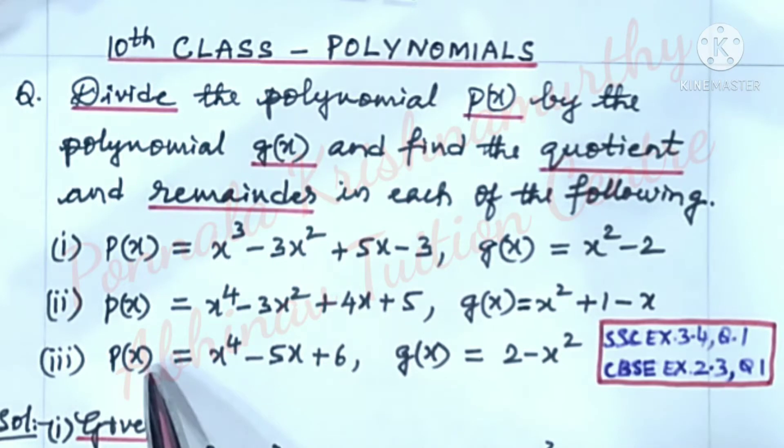3. p(x) is equal to x⁴ - 5x + 6. g(x) is equal to 2 - x².